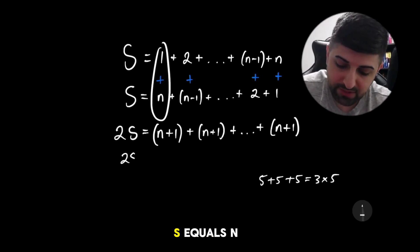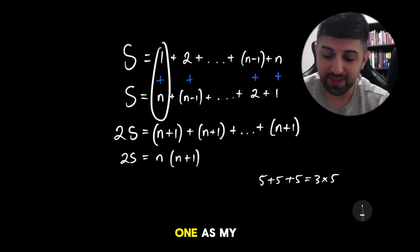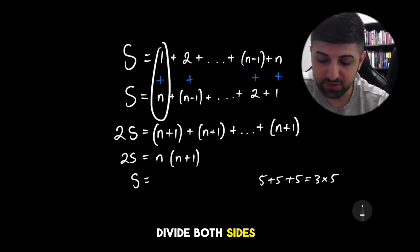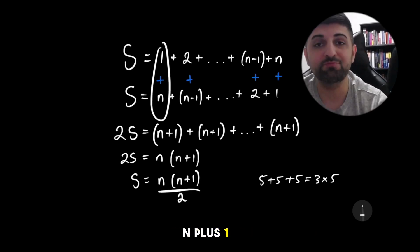I have 2S equals n times n plus 1 as my equation, and then what I can do is I can say, alright, divide both sides by 2, and my formula becomes n times n plus 1 over 2.